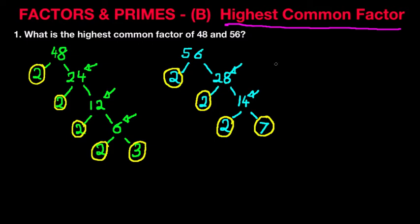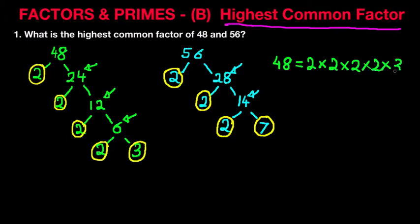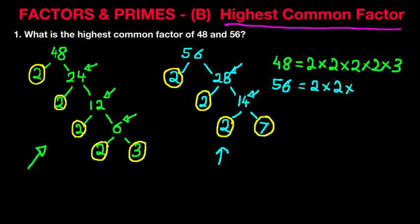Let's write these down. 48 equals — all the ones we've circled for the number 48 — 2 times 2 times 2 times 2 times 3. Those are all the ones that we circled for the number 48. Now let's write down the ones for the number 56. All the prime factors of the number 56 are 2 times 2 times 2 times 7.